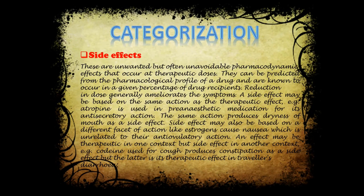Now, categorization: adverse drug effects can be categorized into various sub-categories. The first one is Side Effects. Side effects are unwanted but often unavoidable pharmacodynamic effects that occur at therapeutic doses. This can be predicted from the pharmacological profile of a drug and is known to occur in a given percentage of patients. Reduction in dose generally reduces the symptoms.